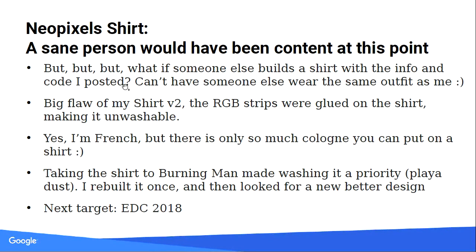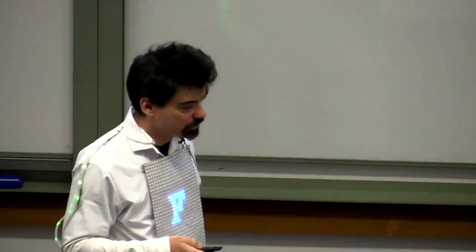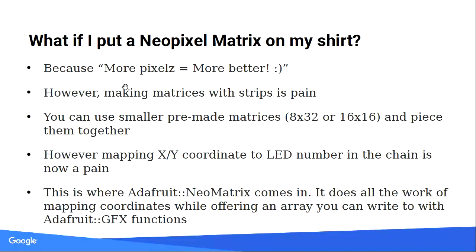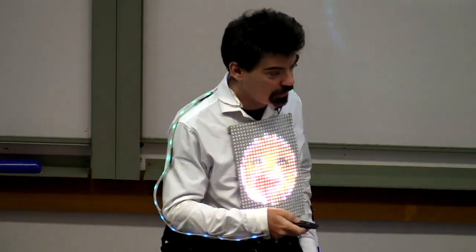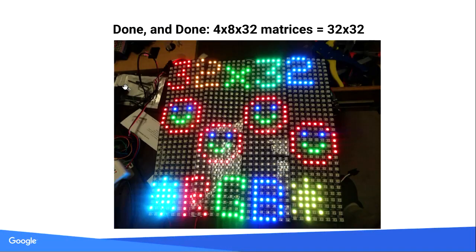The shirt — a regular person would have been happy. But I thought, hey, can I do better? The answer is always yes. The bigger thing is I want to wash the shirt. So I have this panel I can actually take off. Can you put a matrix? Yes, obviously. So the pre-matrix — those are actually three matrices of 8x32 being tied together by a port of the Adafruit NeoMatrix library that I did using the FastLED backend. That is this library here. Why FastLED as opposed to the other one — you're going to have to read the slides because we're running out of time.